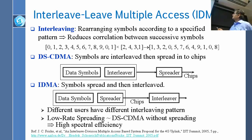For example, suppose the interleave pattern is 2-4-3-1. That means you take the second symbol first, then the fourth, then the third, then the first. In this simple example, each symbol is one digit, so applying pattern 2-4-3-1 to the first group gives you: 1, then 3, then 2, then 0.